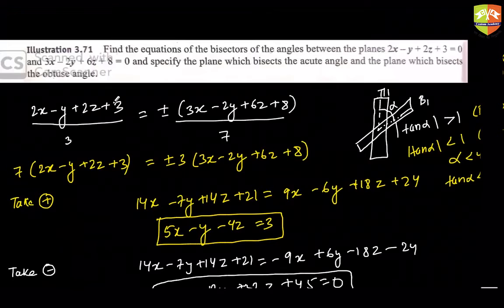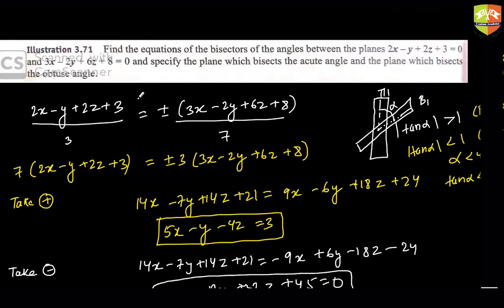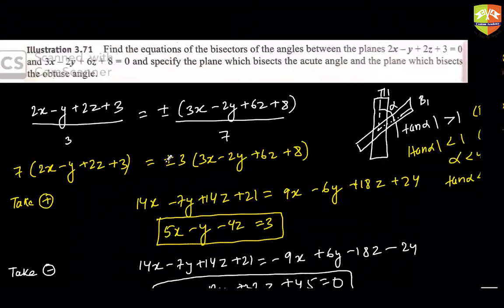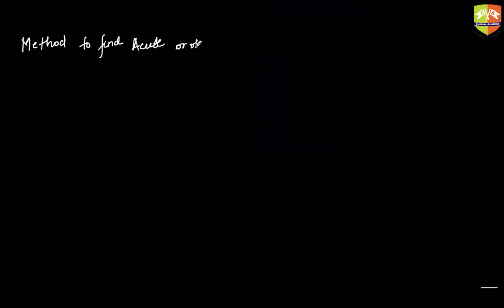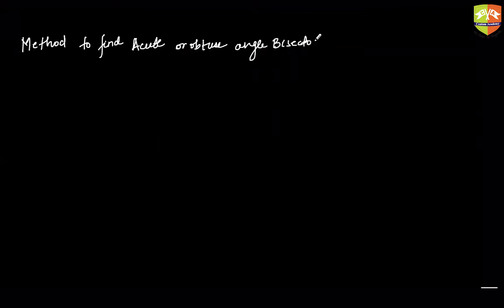Many a times they ask a very targeted question: find the equation of the obtuse angle bisector of these two planes. Many people think that finding both equations is a waste of time. So, can I have a direct algorithm or formula to jump directly to the equation we need, rather than finding both and then figuring out which is which? I have a method by which you can directly find the acute or obtuse angle bisector.